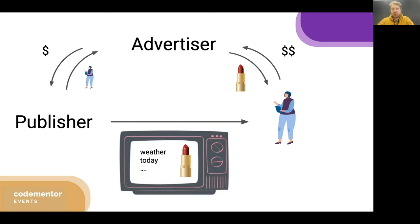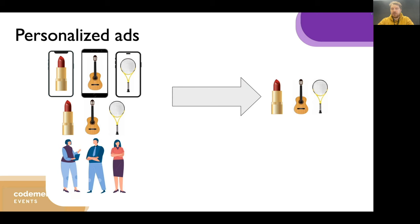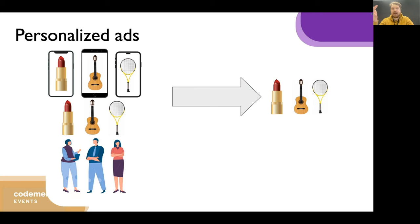Now let's look at personalized ads. On the internet, different users see different ads. Two users opening the same page on the New York Times or Reddit will see different ads. If ads work really well, they consider user interests — a user interested in lipstick sees a lipstick ad, a user interested in sports sees a sports equipment ad — and hopefully users actually buy something, which unlocks a lot of value.